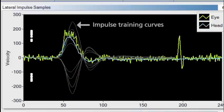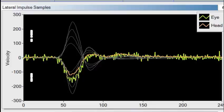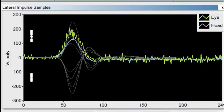Positive velocities represent leftward head impulses. Negative velocities represent rightward head impulses. The actual head and eye trace are superimposed on top of the gray training lines.